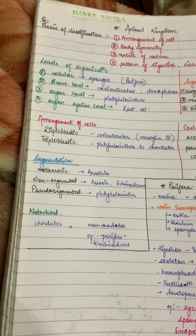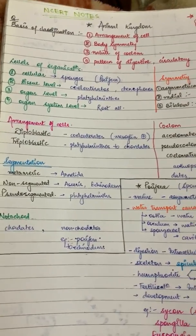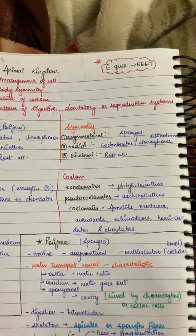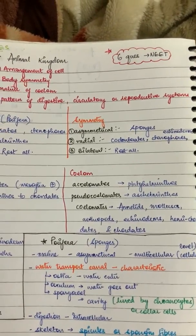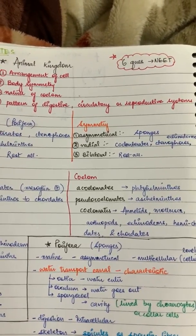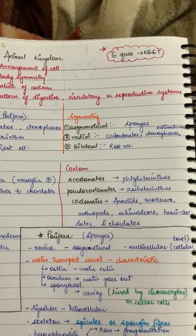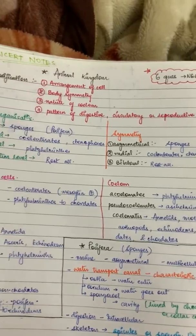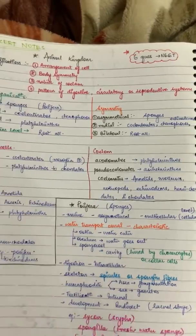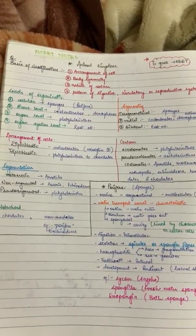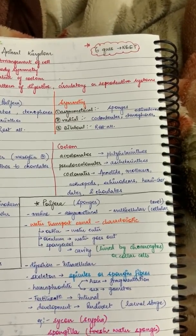There will be questions on arrangement of cells and segmentation, and also on coelom in non-chordates. You need to know the meaning of coelom and body cavity. So go through your book once - when you do, you will understand what these terms mean. Then you can revise using these notes, which makes revision much easier.